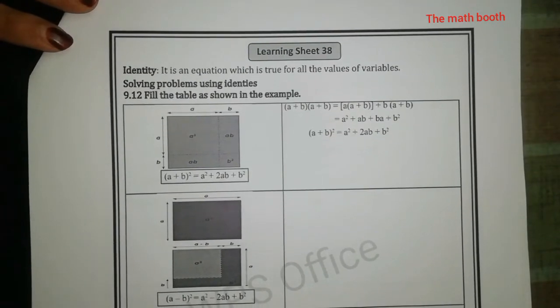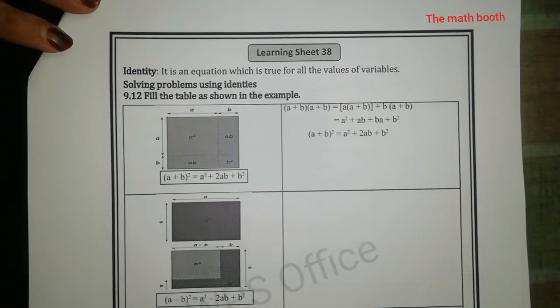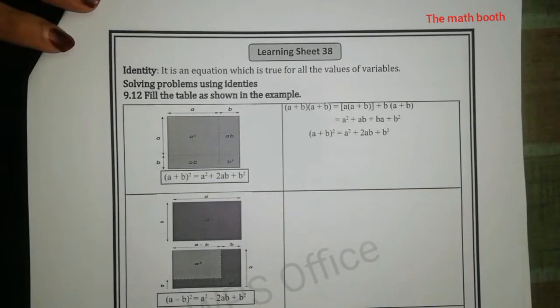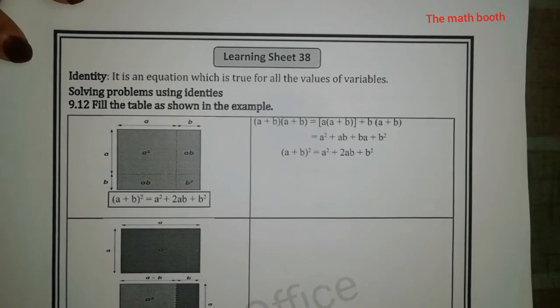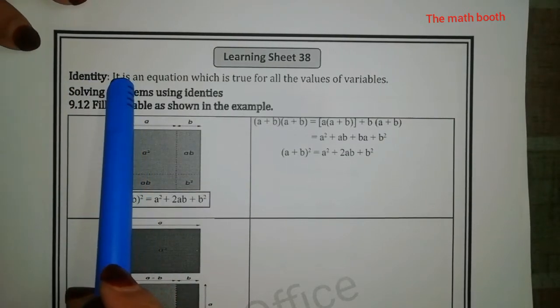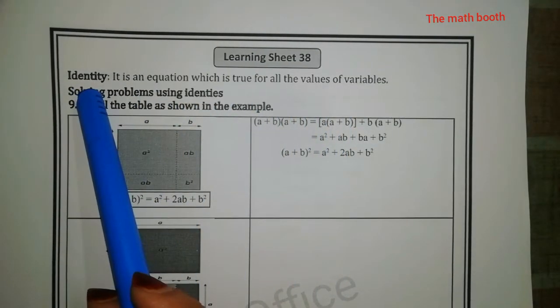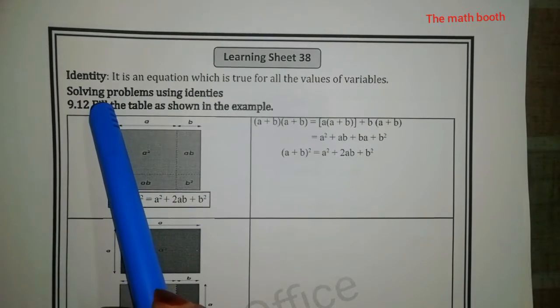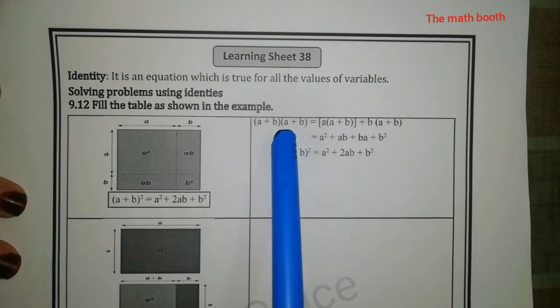Assalamu alaikum, hello everyone, welcome back to my channel. Today I am here with Learning Sheet 38 of Kalika Chetrika for 8th standard. So let us see what is given in Learning Sheet 38. An identity is an equation which is true for all the values of variables. The identity is nothing but a formula — for solving problems using identities, fill in the table as shown in the example.